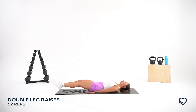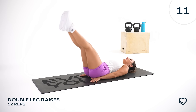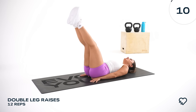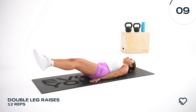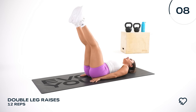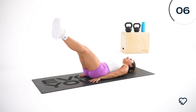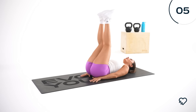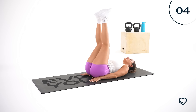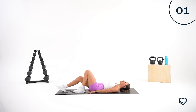Perform 12 double leg raises. If you feel your back arching off the floor, just slow it down and don't go all the way down — bring it to about halfway, then come back up. Keep going, stay with me. Complete all 12 reps. Good job — that one burns!